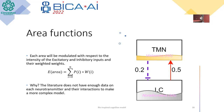Why do we do that simplification? The literature does not have enough data on each neurotransmitter — like production, consumption, and their interaction with other areas — to make a more complex model.